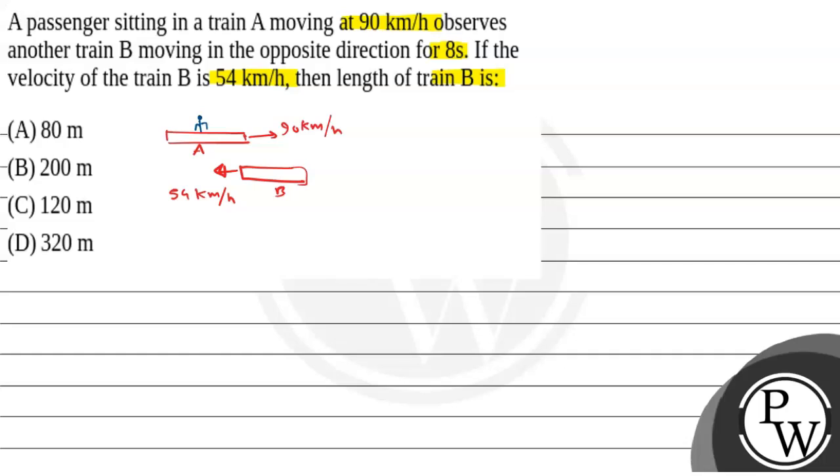The question states that the person sitting on train A sees the train for 8 seconds. So we have to find the length of train B. Let's say length is L.